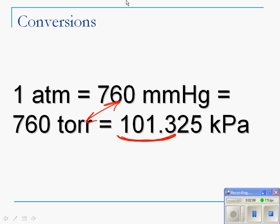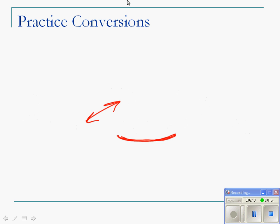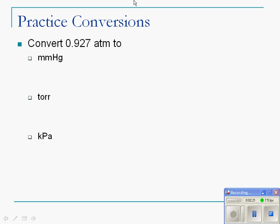So let's actually practice a couple of these. Okay, so we're going to convert 0.927 atmospheres to millimeters of mercury, torr, and kilopascals.